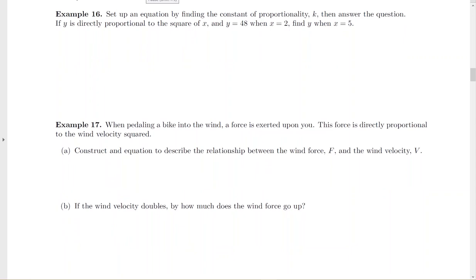For example 16, still finding that constant of proportionality first. So Y is directly proportional, but now it's to the square of x. So I'm going to put in x squared. Then the same idea. Plug in your first set of data. Y is 48. Now be careful because when you plug in the number 2, you've got to square it.